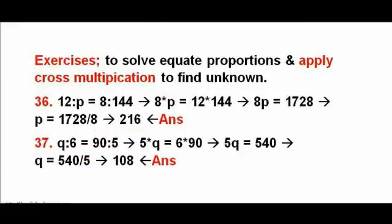Exercises 36 and 37. To solve, equate proportions and apply cross multiplication to find the unknown. The answers are 200, 16, and 108, respectively.